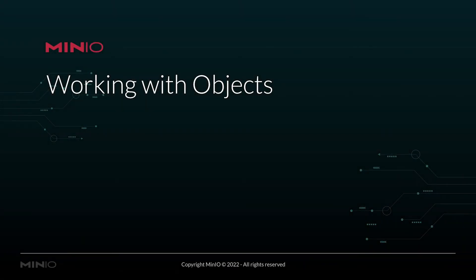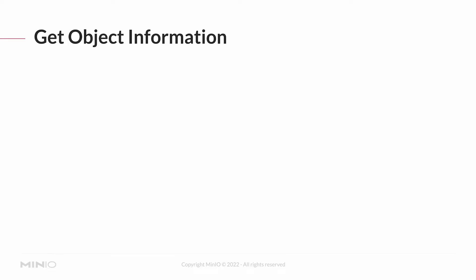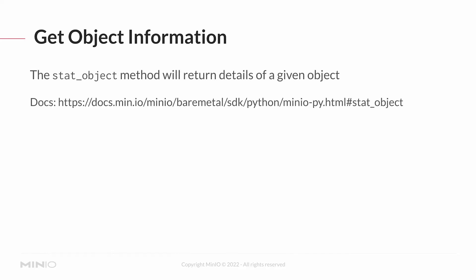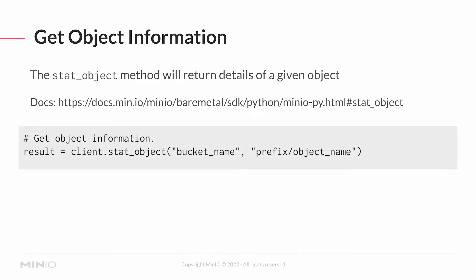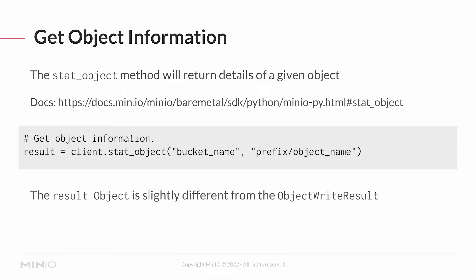The main place you're going to see prefixes is when you're working with objects. The first tool we're going to look at is getting some information about an object, done via the stat_object method. It gives you all the details about when an object was uploaded and other information. The call is very simple — just stat_object with a bucket name and an object name, and an optional prefix. The result is an object, and using the print method provided in the lab code, you can get the object name, last modification date, and more.